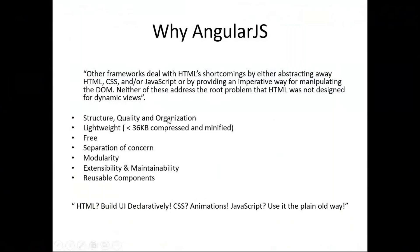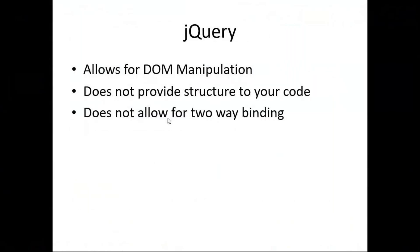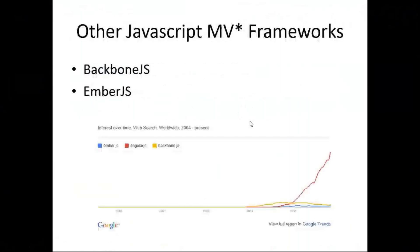Now let's talk about jQuery, one of the concepts within this context. jQuery allows for DOM manipulation - the Document Object Model. For example, the HTML tag at the top of the tree is the root element, within which we can have multiple sub-elements like body. However, jQuery does not provide structure to your code, and it does not allow for two-way binding - top and bottom.